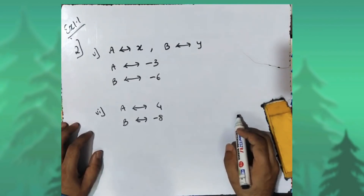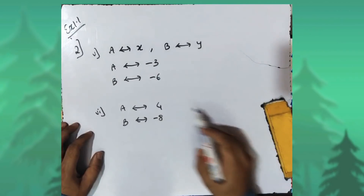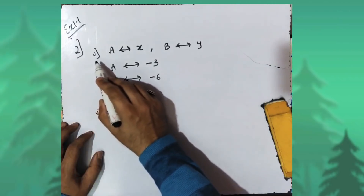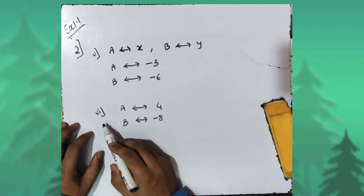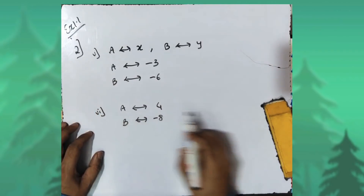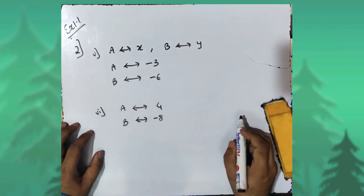Similarly, you can do sub-parts five and six using the same formula: higher coordinate minus lower coordinate.